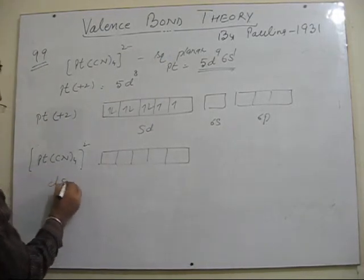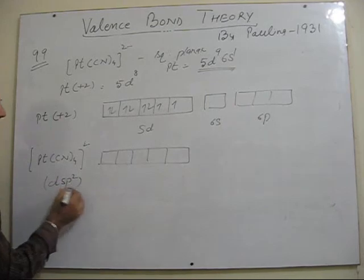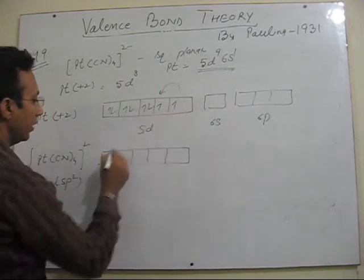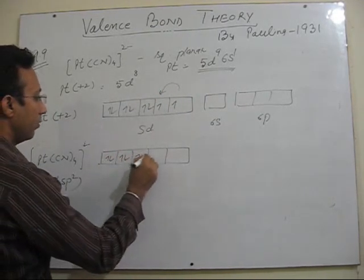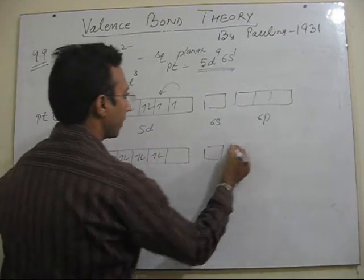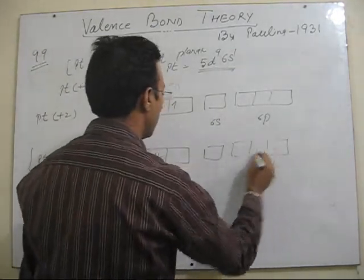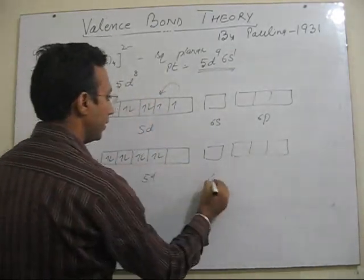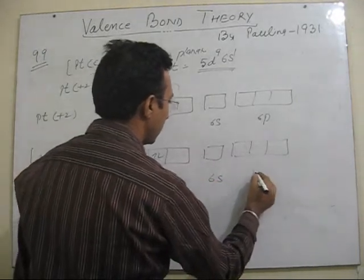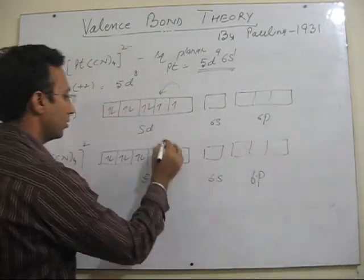And now in order to accommodate 4 cyanide ligands, it has to vacate 4 orbitals. We have s and p which are empty and it has given as square planar. So it is very simple to answer. The complex hybridization is known DSP2. So obviously there will be a pairing and one of the d is empty. Therefore it will be a hybridization like this.